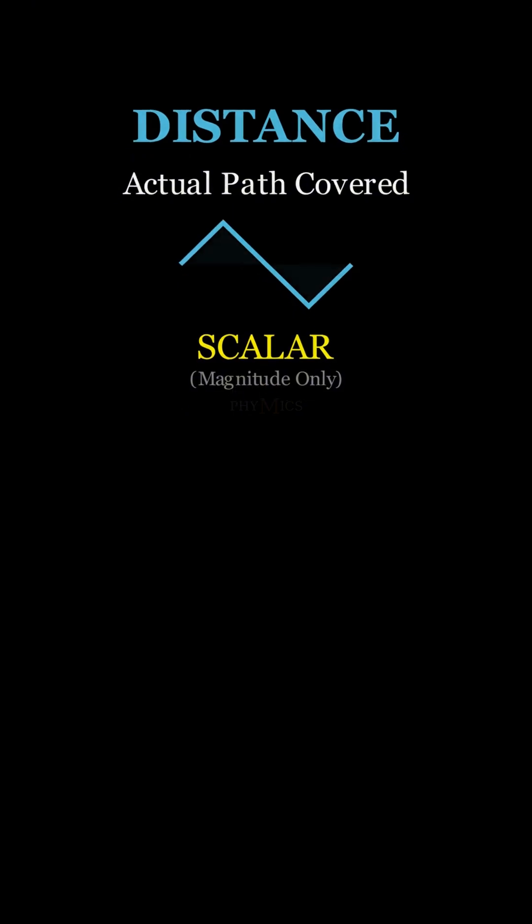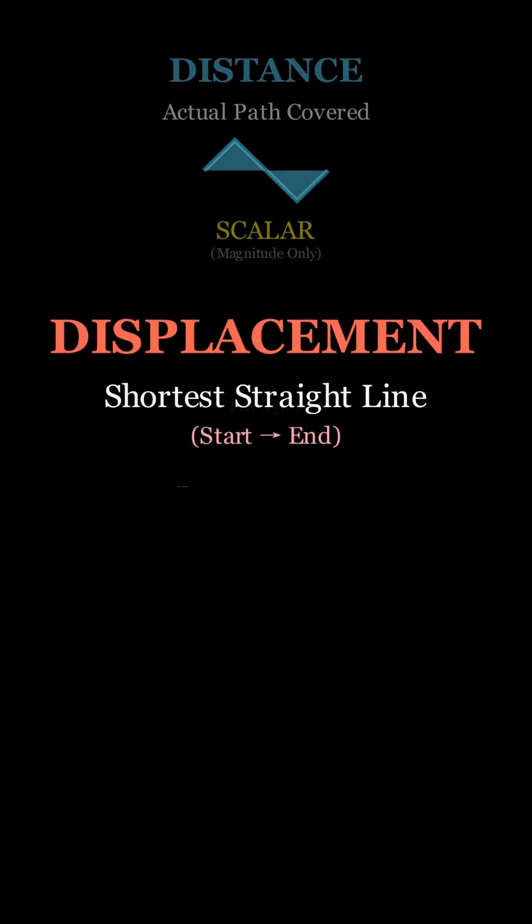On the other hand, displacement is the shortest distance between the initial and final points and thus always is a straight line between these two points. Unlike distance, it is a vector quantity and has both direction and magnitude.